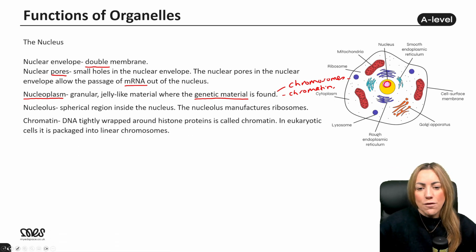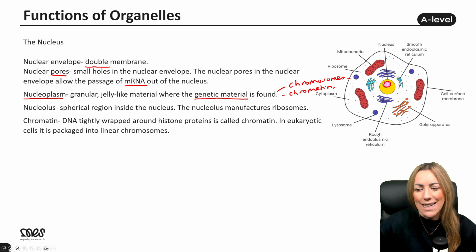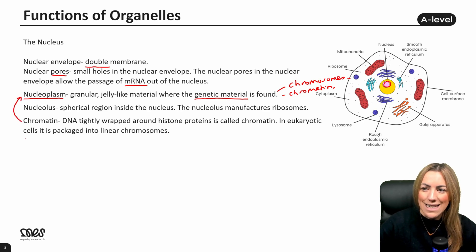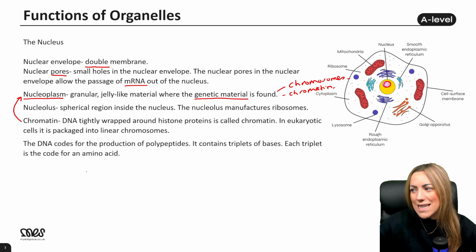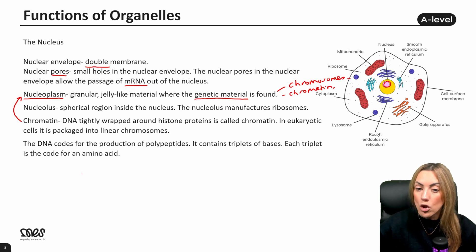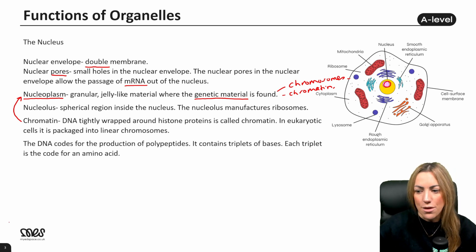DNA tightly wrapped around histone proteins is called chromatin, and in eukaryotic cells it's packaged into linear chromosomes, which are found in the nucleoplasm. The DNA specifically codes for the production of polypeptides — it contains triplets of bases, so sets of three bases, and each triplet is the code for one amino acid. The order of bases in DNA determines the order of amino acids in the protein.